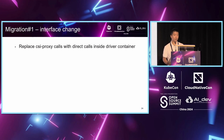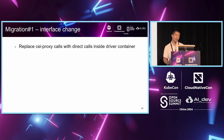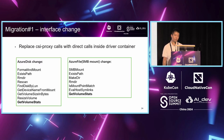About the interface changes: we need to replace the original CSI proxy code with direct code inside the driver container. Taking Azure Disk and Azure File CSI drivers as an example, it mainly involves replacing the CSI proxy code with direct code in the following functions.